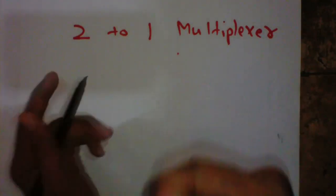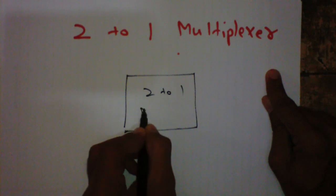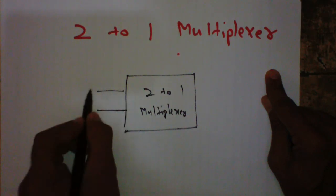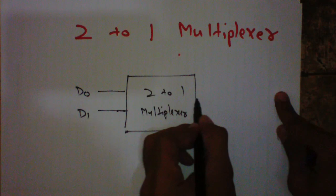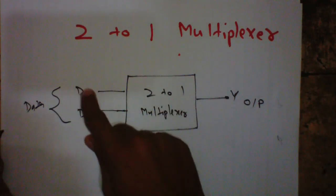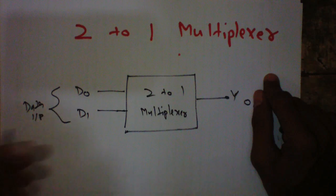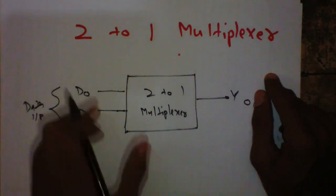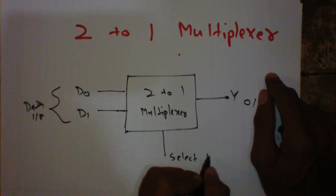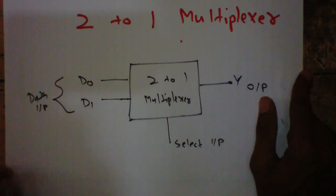A 2-to-1 multiplexer means it has two inputs and one output. I will draw the block diagram. It has two data inputs — this will be called D0 and this will be called D1 — and one output. 'D' indicates data input. As seen in the introduction video, we also apply select inputs to the multiplexer to choose which input is forwarded to the output. We will have one select input. This is the block diagram of the 2-to-1 multiplexer. Now let's see the truth table.